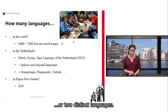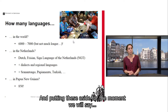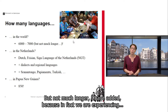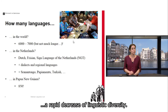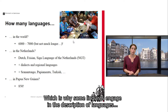This distinction is usually due not so much to linguistic factors, but rather to political or historical issues. Putting these aside, we will say six to seven thousand languages currently spoken in the world — but not much longer, because we are experiencing a rapid decrease of linguistic diversity. Approximately every two weeks a language dies out, which is why some linguists engage in the description of languages that haven't been described properly and are in danger of dying out.